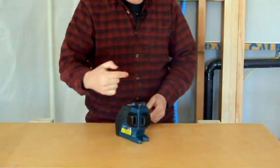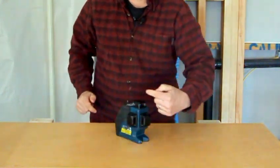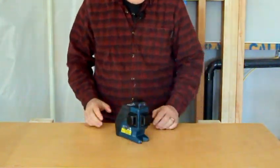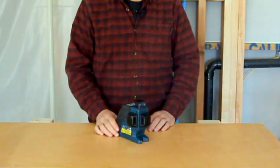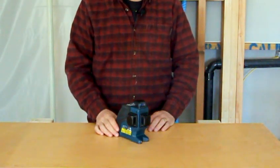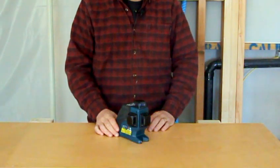It projects a level beam out of here, projects a plumb beam out of here, and a second plumb beam out of here that is square to the first so that you can project square layout under the floor below, ceiling above, and where those lines cross, you can carry the points up and down and use it like a plumb bob.